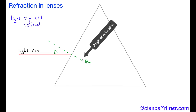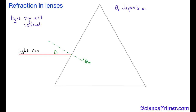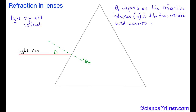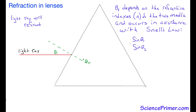The angle of refraction describes the light ray's new path inside the prism. This is the angle between the light ray's new path and the normal on that side of the interface. The angle of refraction depends upon the refractive index n of the two media, and occurs in accordance with Snell's law, which states that the sine of the angle between the normal and the light ray in one medium over the sine of the angle in the other medium is equal to the inverse of the ratio of the two refractive indexes.